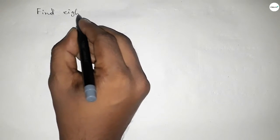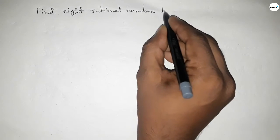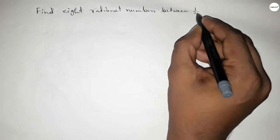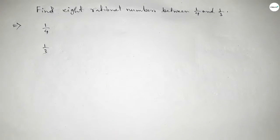Hi everyone, welcome to SS3 classes. Today in this video we have to find 8 rational numbers between 1/4 and 1/3. So let's start. First of all, write down here 1/4 and 1/3.